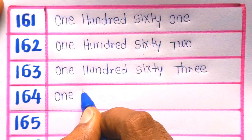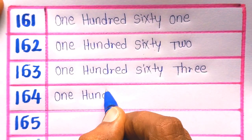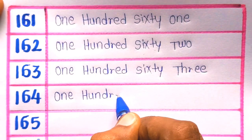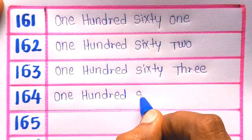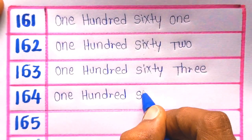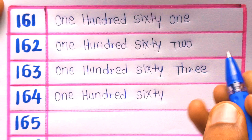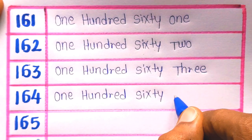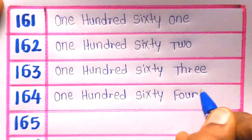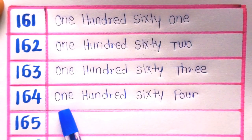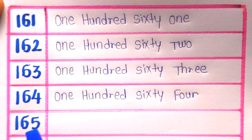164: O-N-E, ONE, H-U-N-D-R-E-D, HUNDRED, S-I-X-T-Y, SIXTY, F-O-U-R, FOUR. 164.